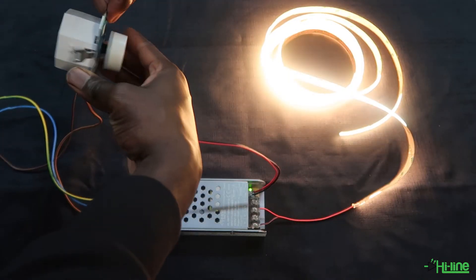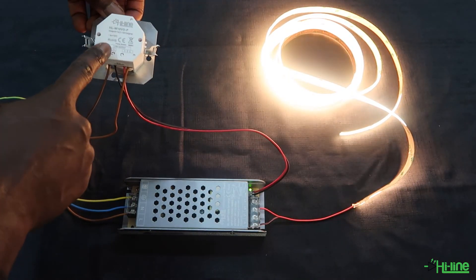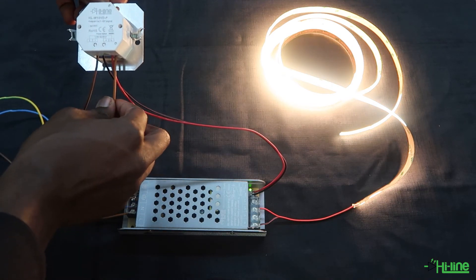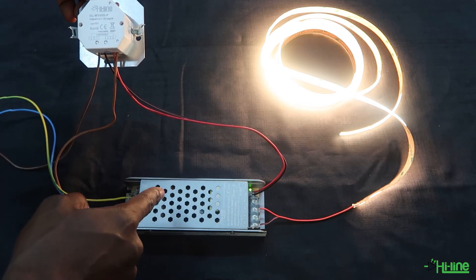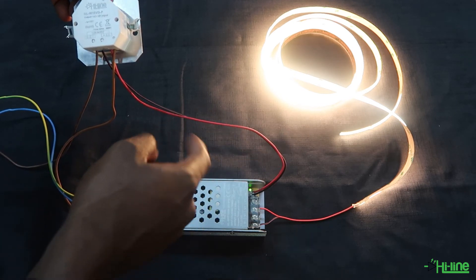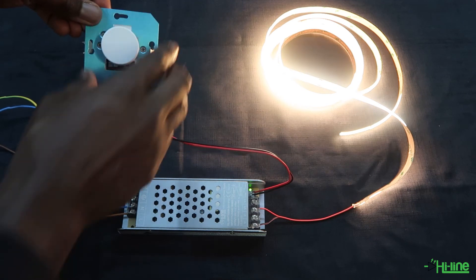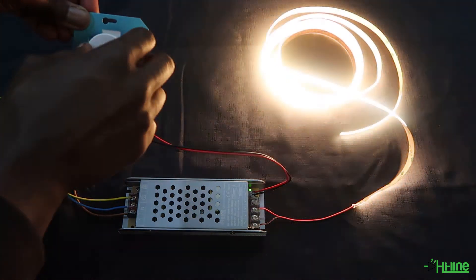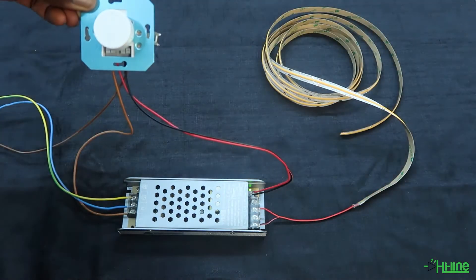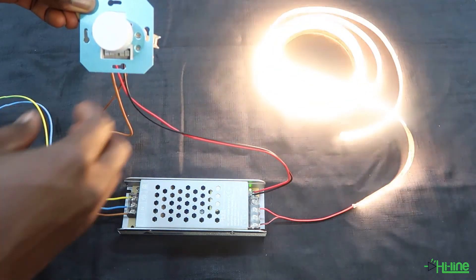If you want to use your dimmer switch for on and off as well as dimming, you will just need to add the live wire into your dimmer switch and then bring the live wire out into your LED driver. You will still need your control wires going into your driver to control your dimming. So now we'll be able to both control the dimming of our LED strip as well as switch off and switch on our LED strip.